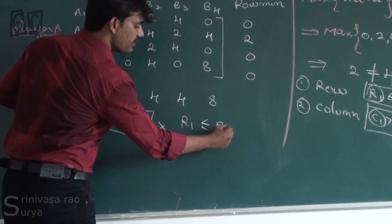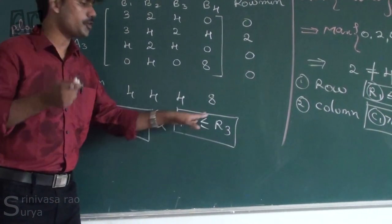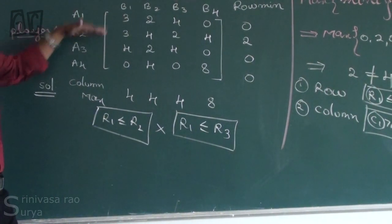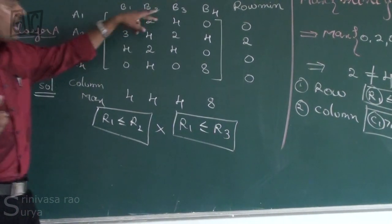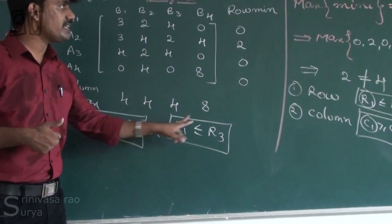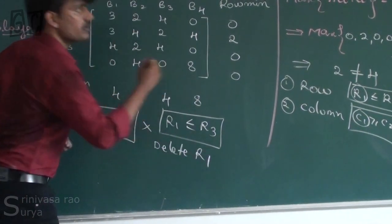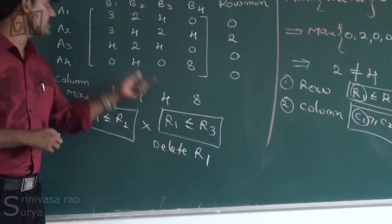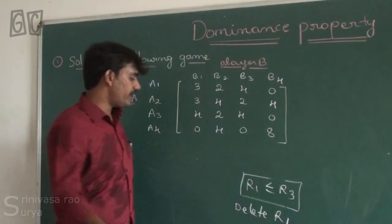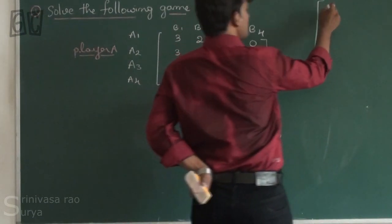Now compare R1 ≤ R3: 3 is less than 4, 2 equals 2, 4 equals 4, and 0 equals 0. So clearly R1 ≤ R3 is satisfied. Therefore we delete R1, because R3 is dominating R1.